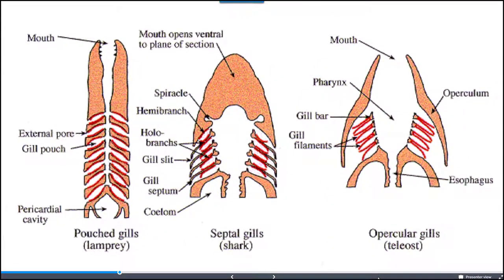Looking at gills in a lamprey on the left, a shark in the middle, and a bony fish on the right: they all generally have a similar structure with branching gills and a high surface-area-to-volume ratio, enabling a larger exchange of oxygen and carbon dioxide. The orange coloration on the right represents the operculum covering the bony fish gills, whereas shark and lamprey gills are exposed to the open environment.